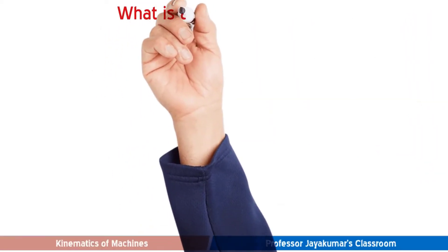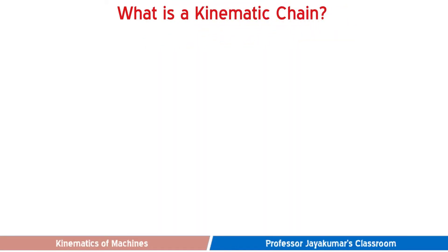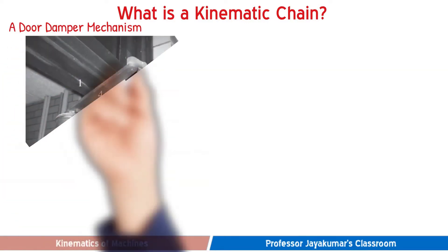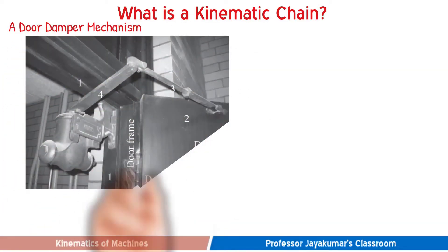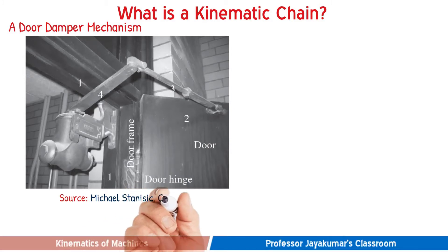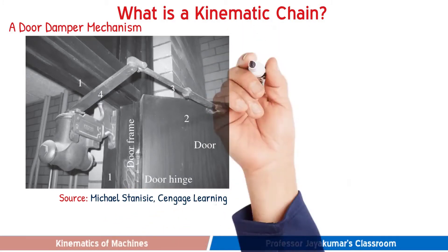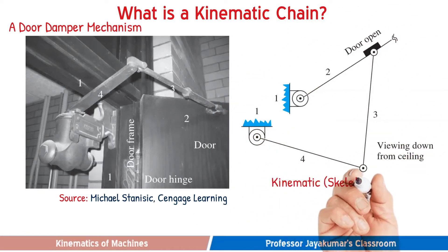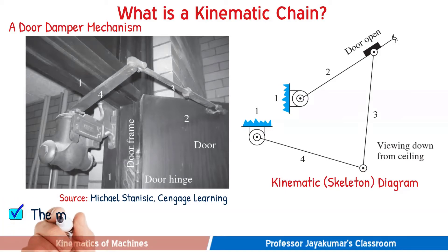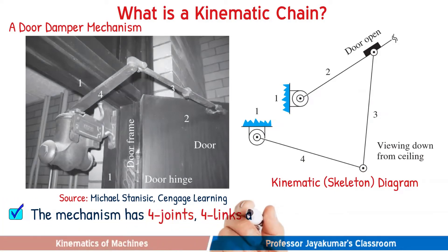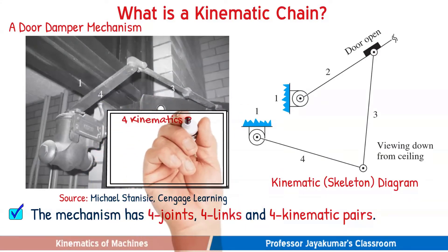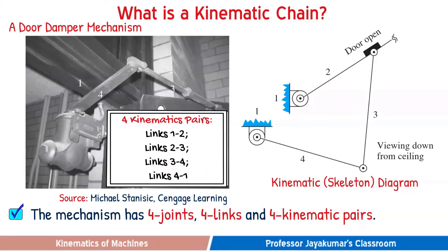What is a kinematic chain? Let us consider an automatic door closure mechanism that is used in our day-to-day life. This door damper mechanism is a four-bar mechanism. The kinematic diagram of the mechanism is shown here. As you could see, this mechanism has four joints, four links, and the combination of links forms four kinematic pairs.